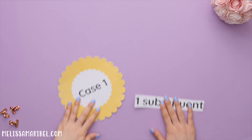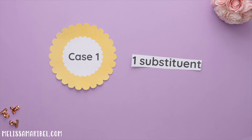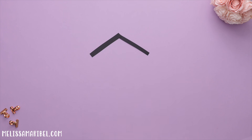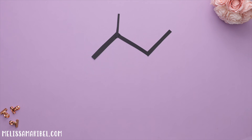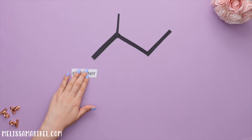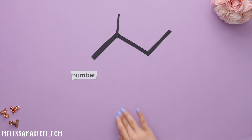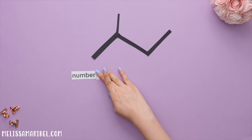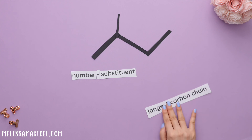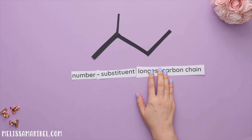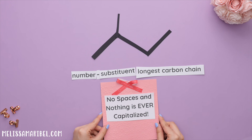Let's apply this to case one: one substituent. For one substituent, this is how we will format the name of the structure — the number is the location of the substituent, followed by a dash, the name of the substituent, and the name of the longest carbon chain. There are no spaces and nothing is ever capitalized.